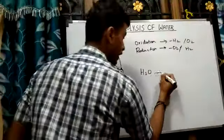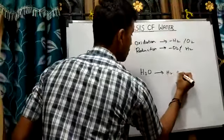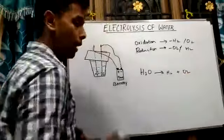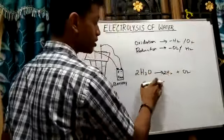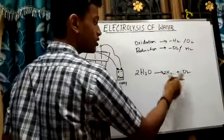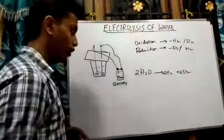By balancing this equation, you get 2H2O, which gives 2 hydrogen molecules and 2 water molecules.